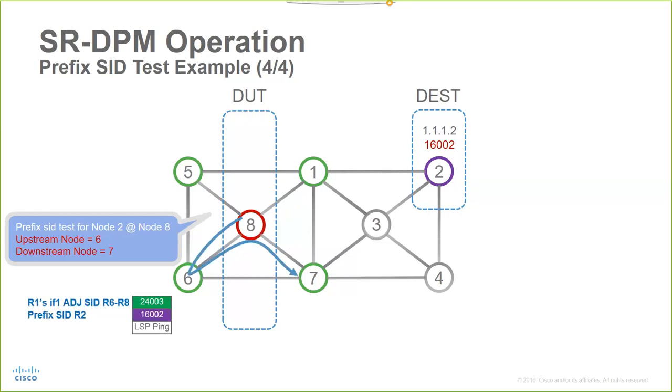Lastly, router number 8 verifies the LSP to router number 2 using router 6 as upstream and now router 7 as downstream. This completes the iterations required to test the LSP to router number 2. The DPM process will continue execution of tests for the remaining of the prefix seeds in the network.